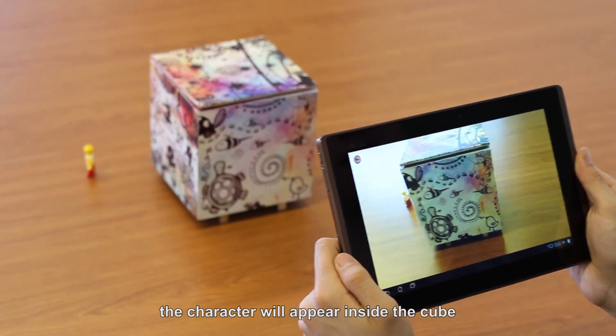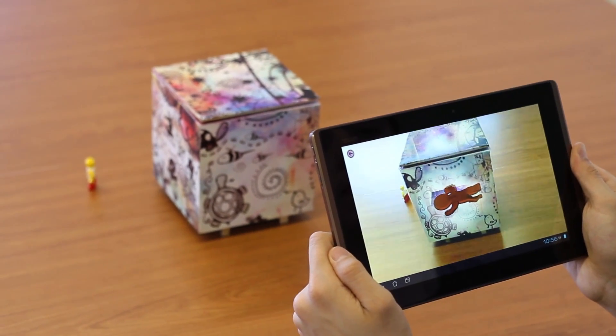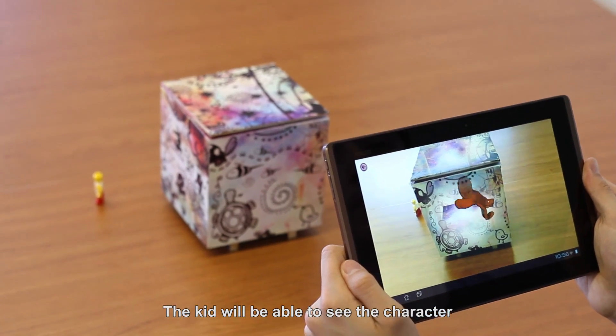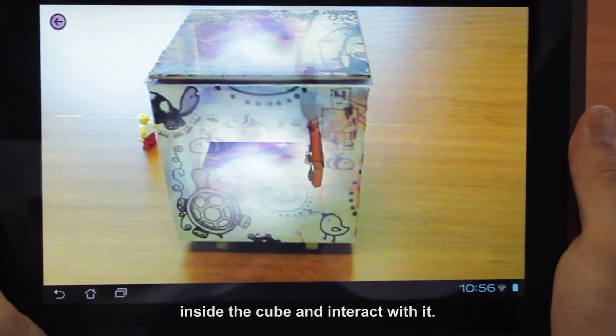When the AR is displayed, the character will appear inside the cube and will become alive. The kid will be able to see the character inside the cube and interact with it.